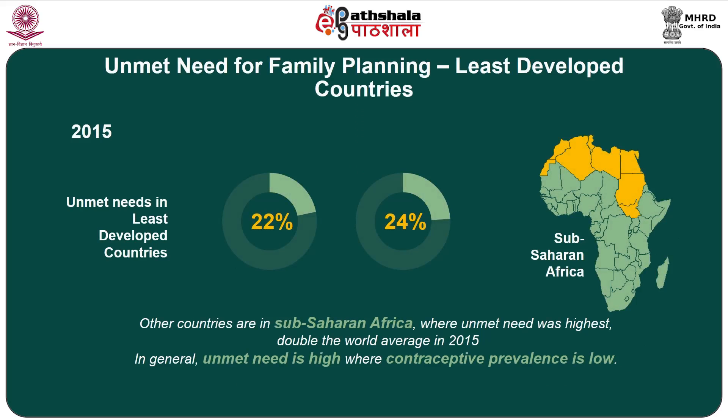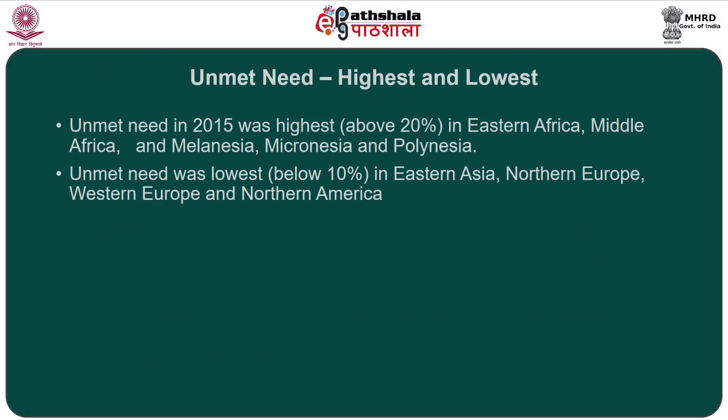Unmet need for family planning was much higher in the least developed countries at 22 percent — meaning 1 in 5 married or in-union women had an unmet need. Countries with such higher unmet need are basically from sub-Saharan Africa, where unmet need was highest at 24 percent. In general, unmet need for family planning is high where contraceptive prevalence is low, indicating a negative relationship: wherever contraceptive prevalence is high, unmet need will be low, and vice versa.